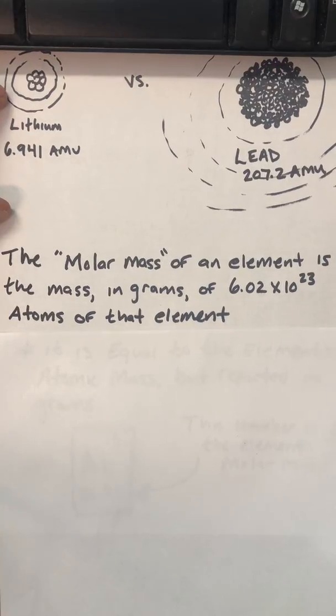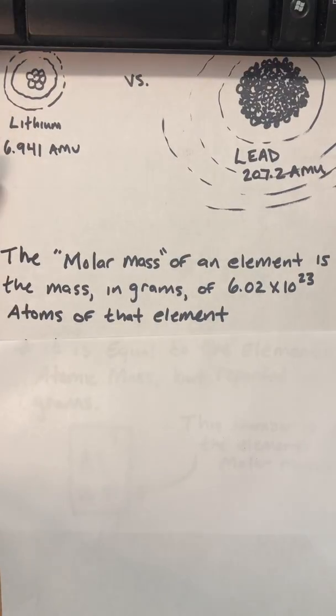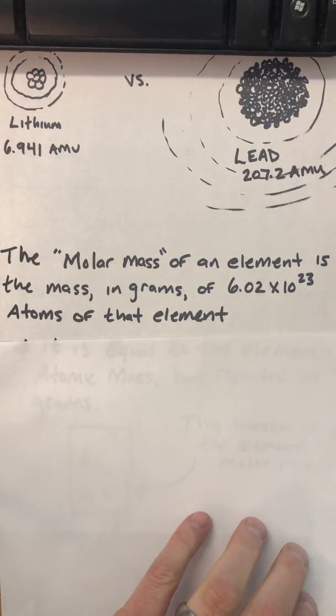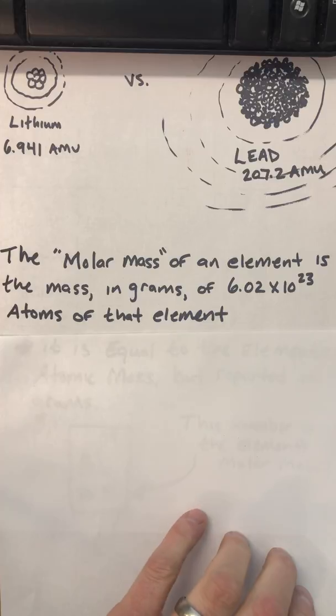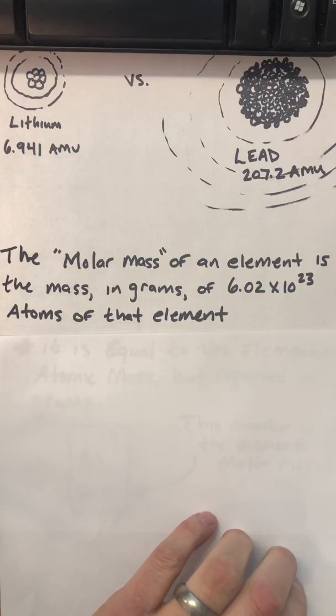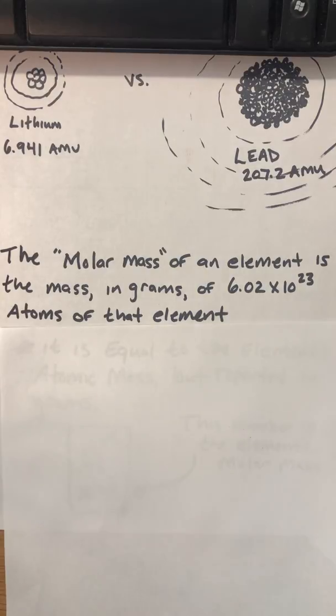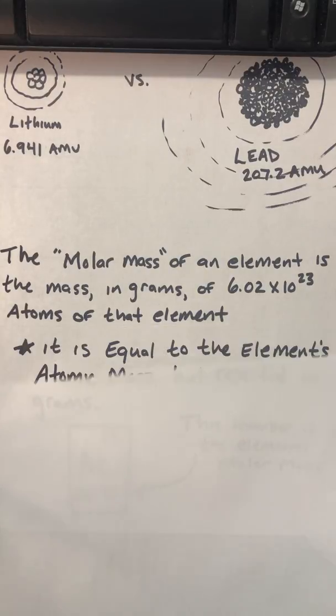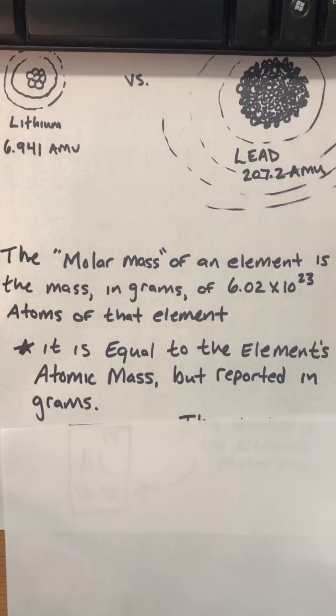So if you were to have Avogadro's number of atoms of a single element, you would call that the molar mass. It's the mass in grams of 6.02 times 10 to the 23rd atoms of that element, right? And it's equal, and this is where it gets easy actually, it's equal to the element's atomic mass, but it's reported in grams instead of atomic mass units.